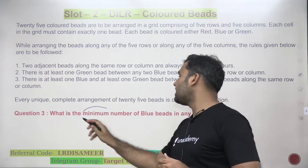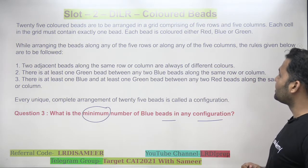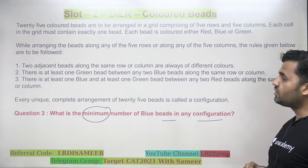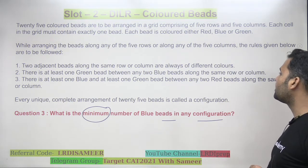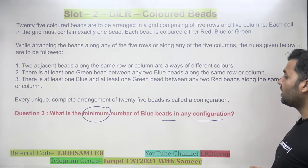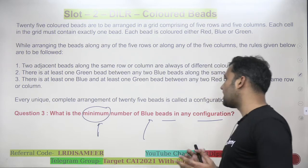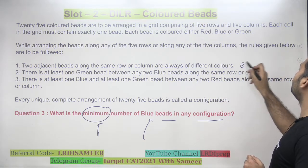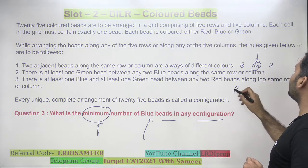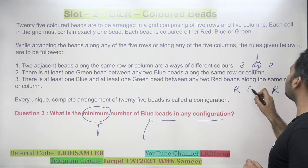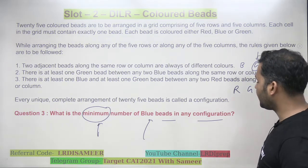Question number 3 says: what is the minimum number of blue beads in any configuration? We have a 5×5 matrix and the number of colored beads we can use are red, blue, and green. The important word here is minimizing the number of blue beads. The conditions are: between two blue beads there has to be at least one green; between two red beads there has to be at least one green and blue; and two adjacent cells should not have the same color bead.